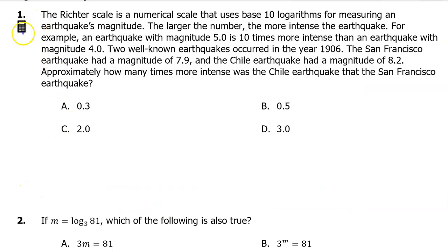Example 1, which is calculator active. The Richter scale is a numerical scale that uses base 10 logarithms for measuring an earthquake's magnitude. The larger the number, the more intense the earthquake. For example, an earthquake with magnitude 5.0 is 10 times more intense than an earthquake with magnitude 4.0.